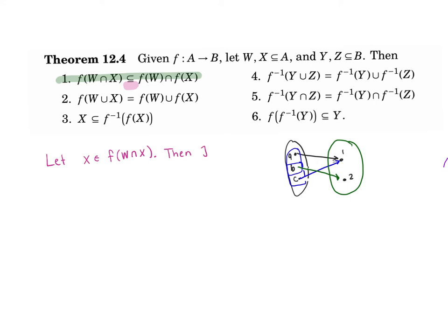X, so many letters. What does it mean that x is in an element of f(W ∩ X)? Then that means there exists some a in W ∩ X such that f(a) = x.